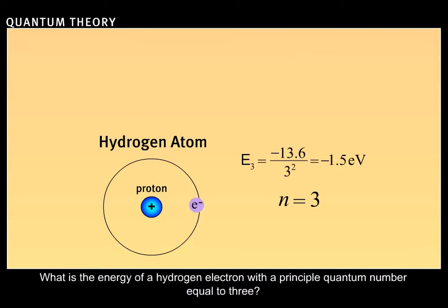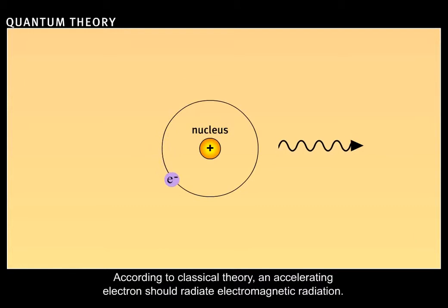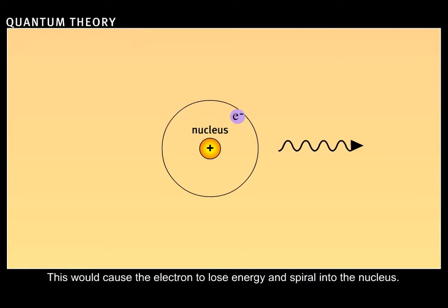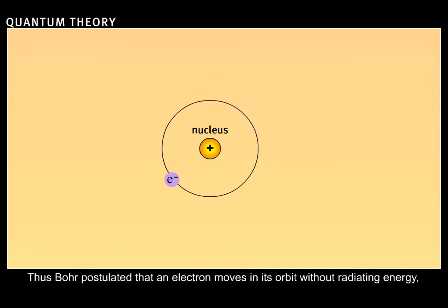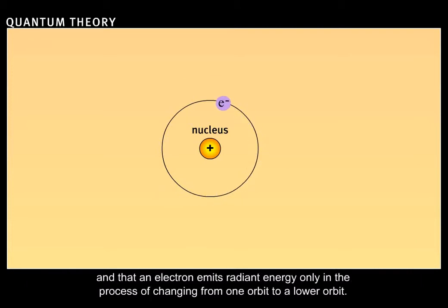The energy of the electron is minus 1.5 electron volts. According to classical theory, an accelerating electron should radiate electromagnetic radiation. This would cause the electron to lose energy and spiral into the nucleus. This clearly does not occur. Thus Bohr postulated that an electron moves in its orbit without radiating energy and that an electron emits radiant energy only in the process of changing from one orbit to a lower orbit.